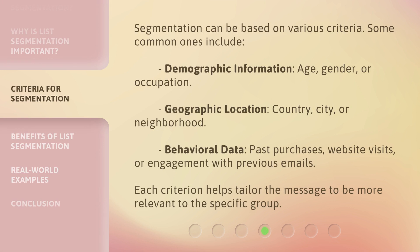Segmentation can be based on various criteria. Some common ones include demographic information such as age, gender, or occupation; geographic location such as country, city, or neighborhood; and behavioral data such as past purchases, website visits, or engagement with previous emails. Each criterion helps tailor the message to be more relevant to the specific group.